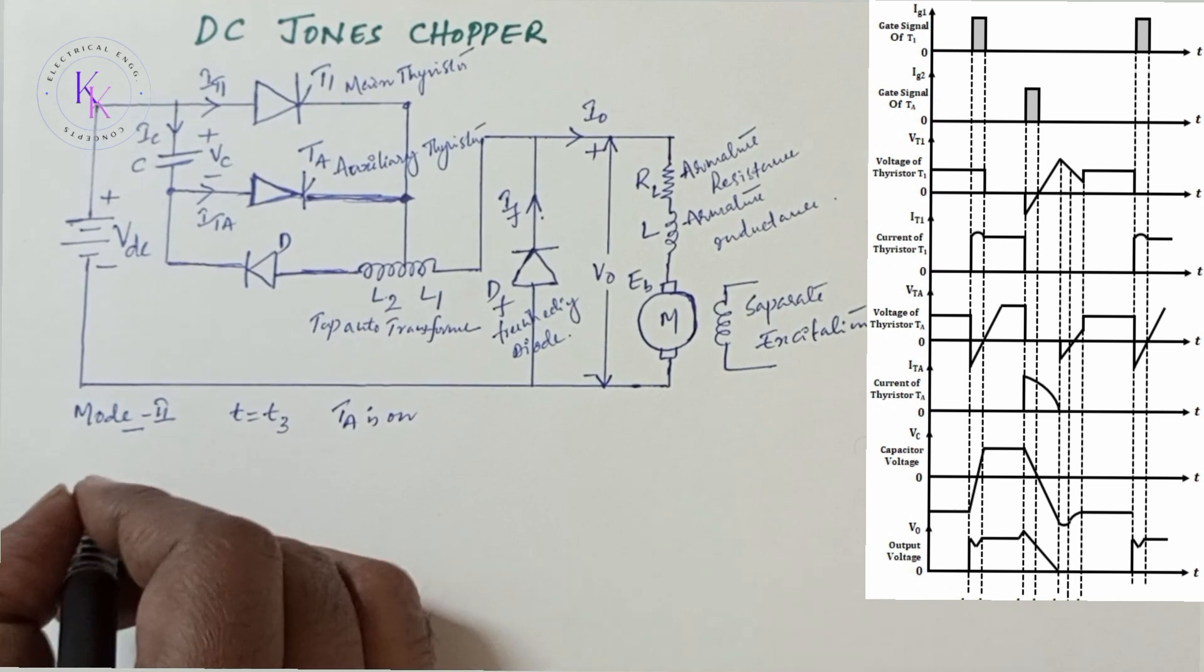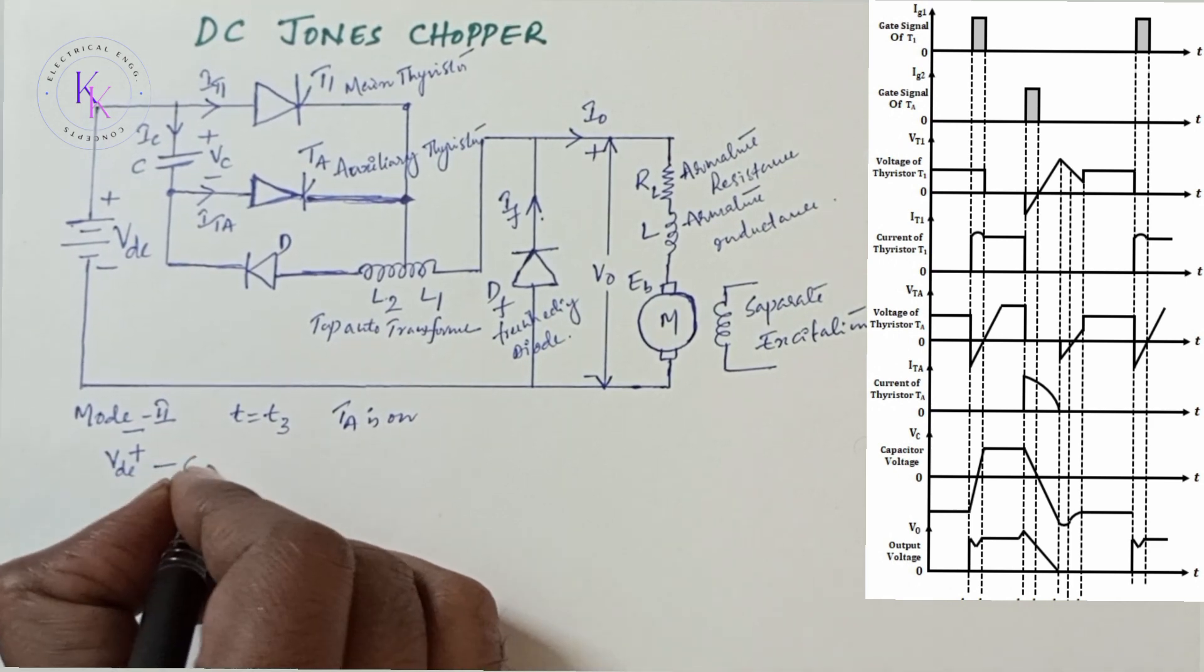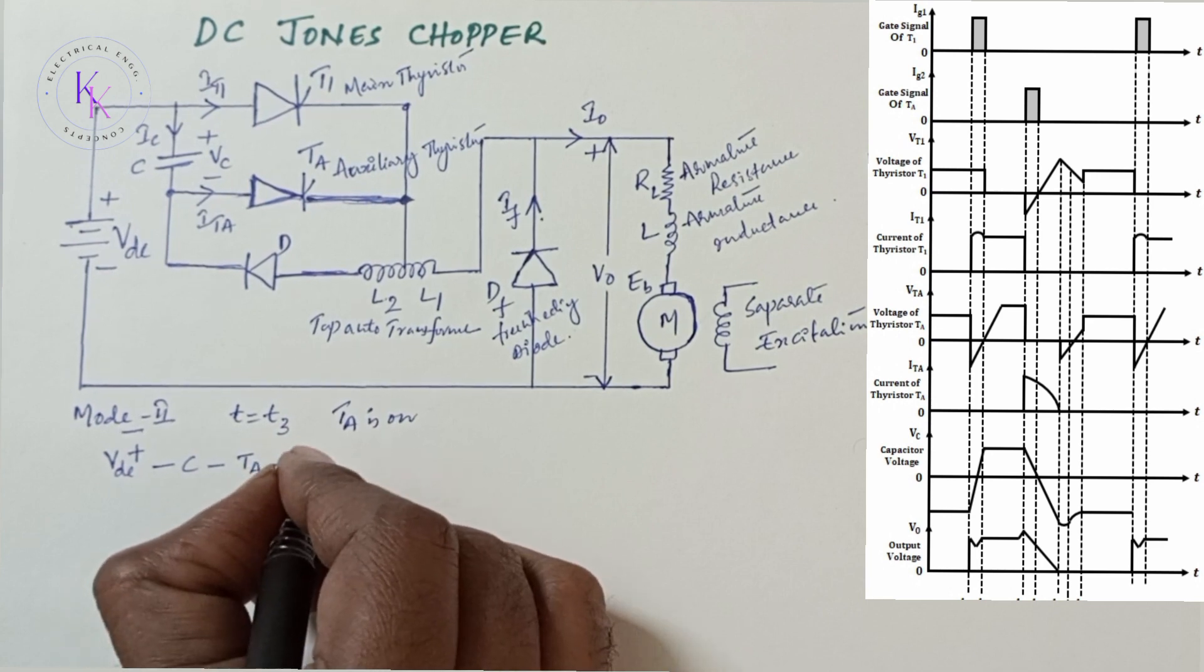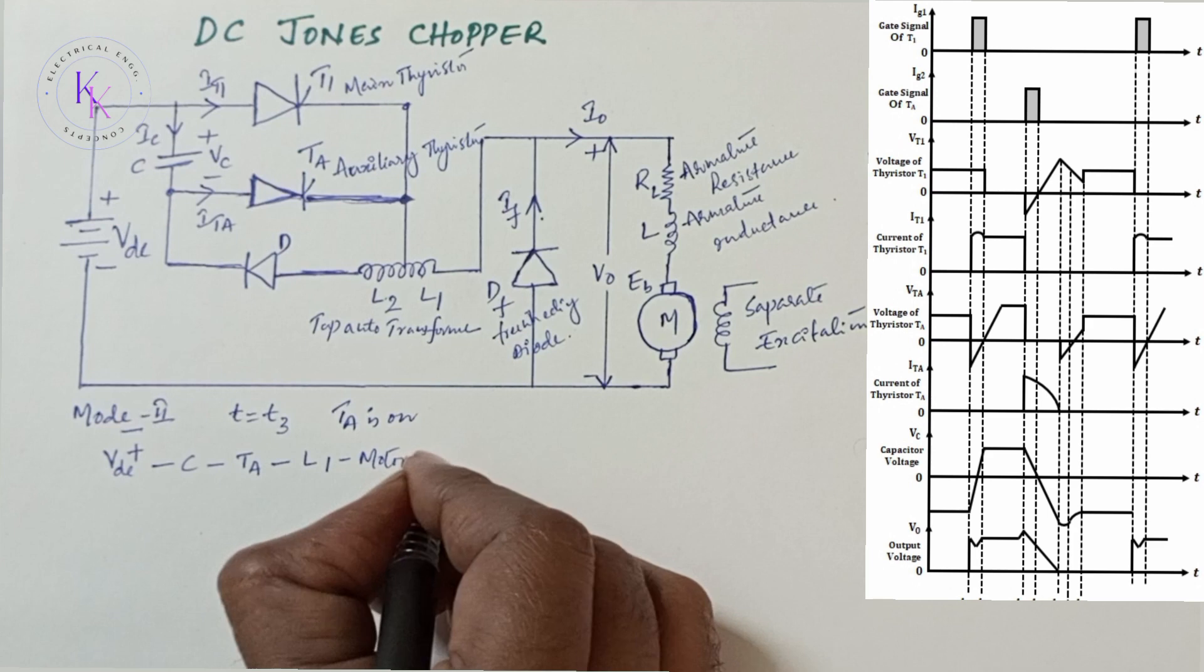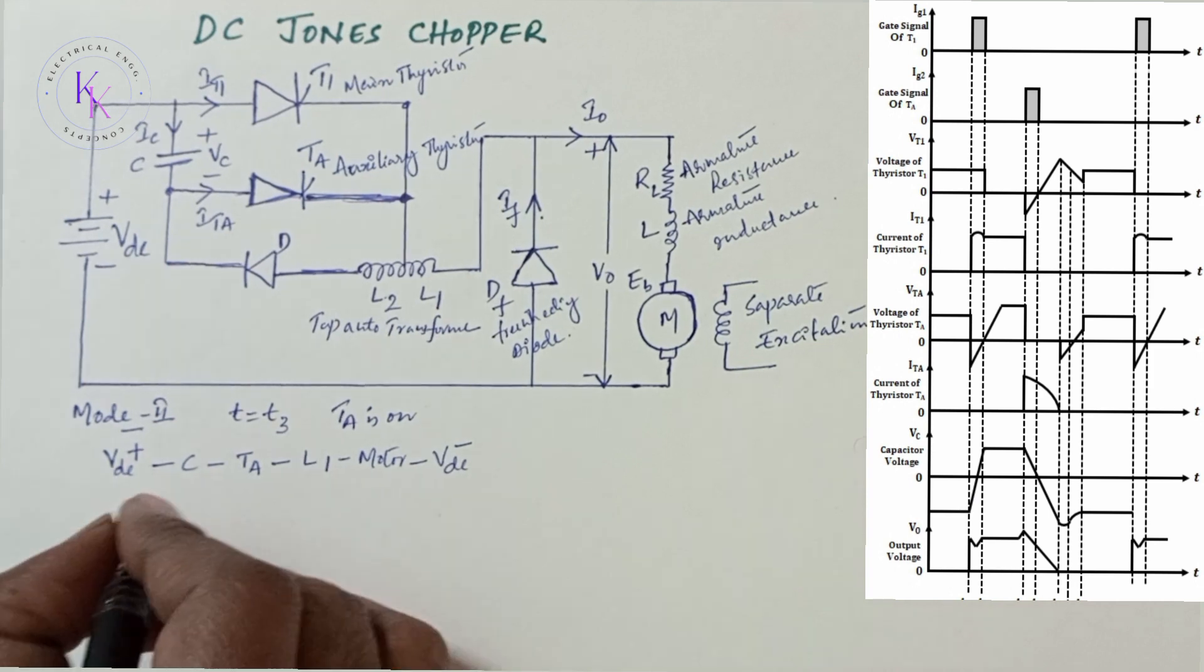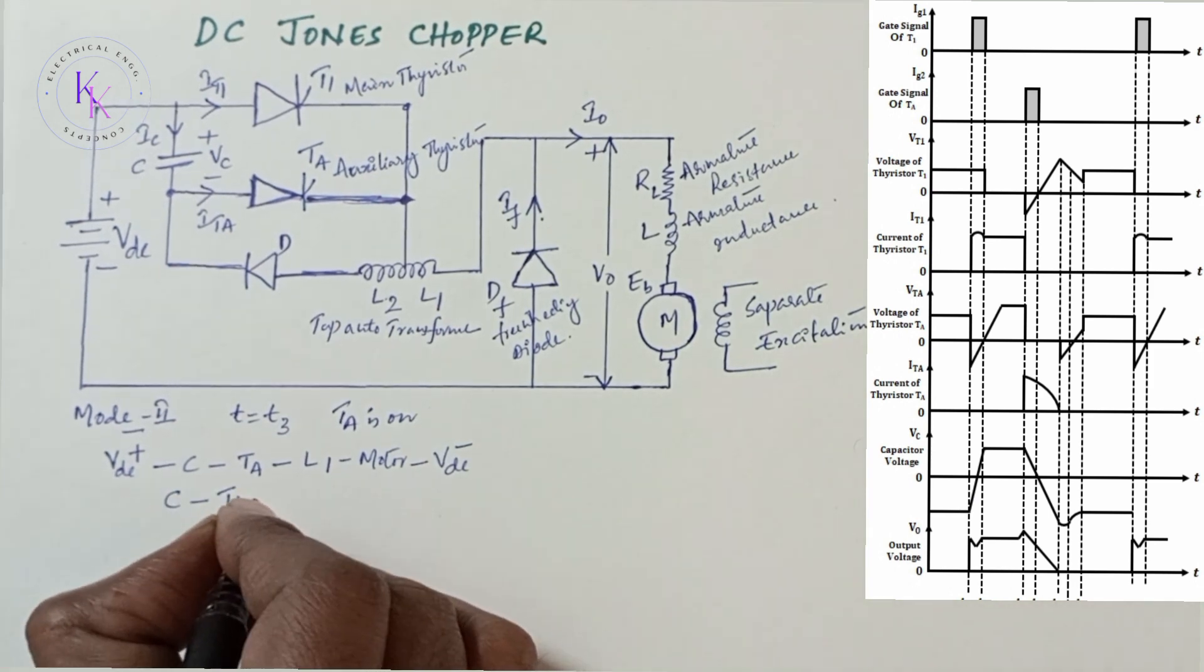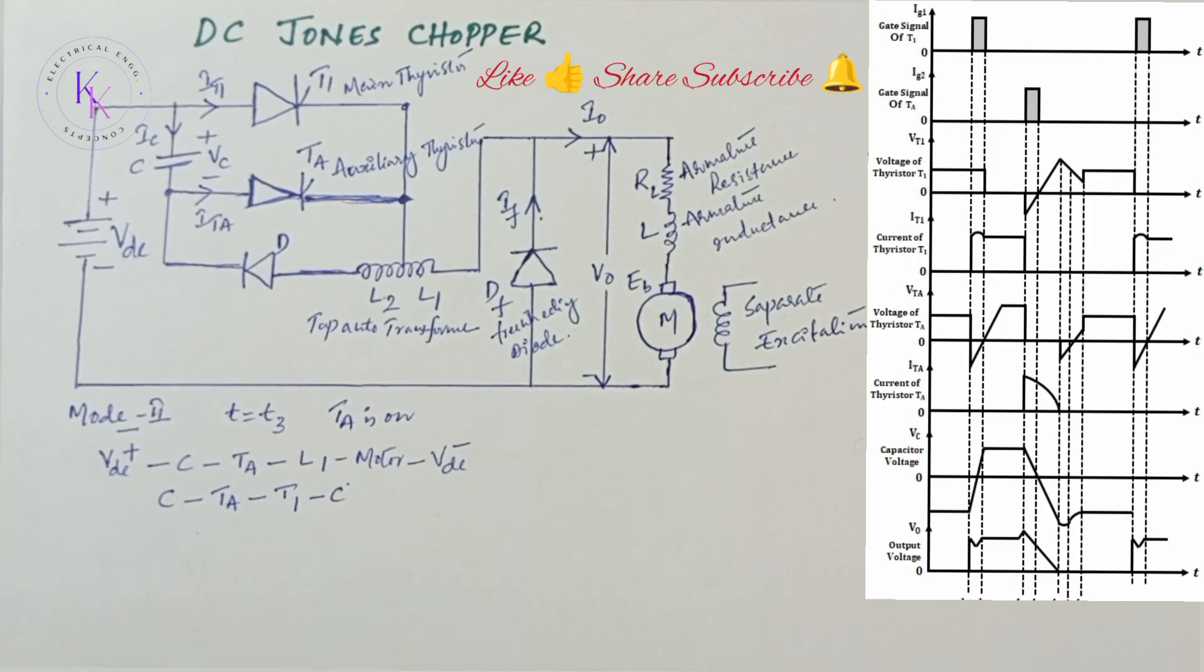When this auxiliary thyristor is turned on, current flows from VDC plus through C to auxiliary thyristor to L1 to the motor back to VDC negative. At the same time, capacitor C discharges through C to TA through thyristor T1 and back to capacitor C.